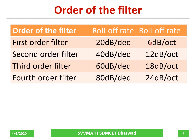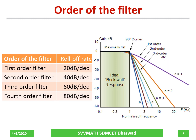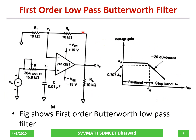That is also expressed as 6 dB per octave. The frequency response shows 20, 40, 60, and 80 dB per decade roll-off rates. Ideally we want a 90-degree corner, but that is very difficult to achieve practically. Now, the first-order low pass Butterworth filter circuit diagram uses only the RC combination with one capacitor, since it is first order.